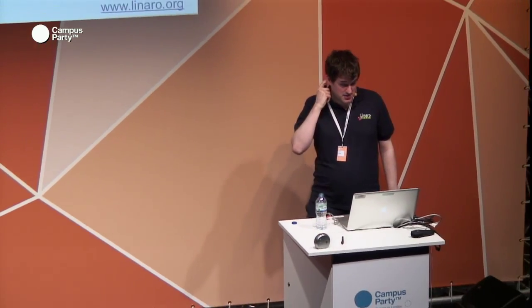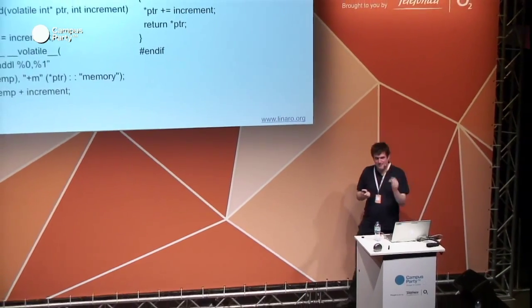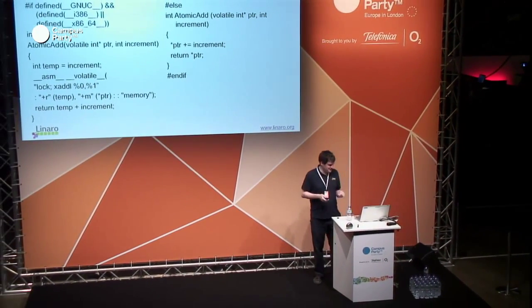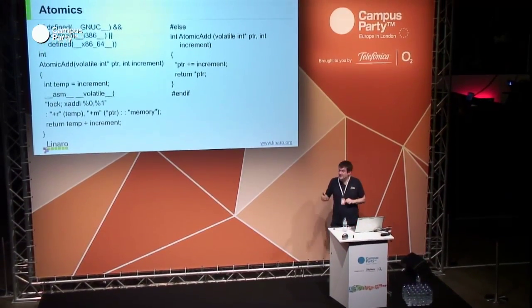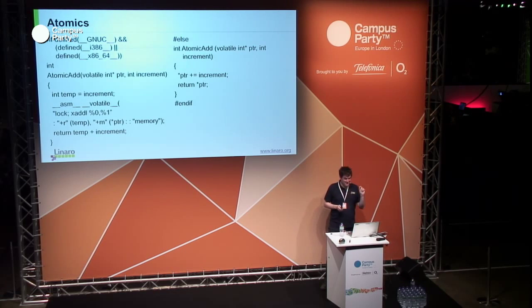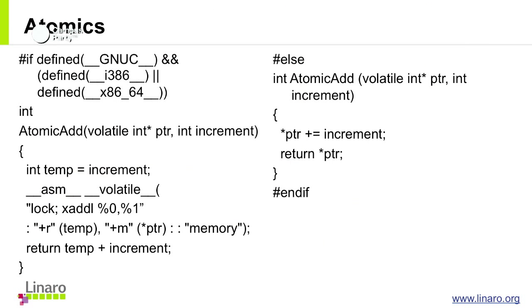Now I'm going to talk about atomics. One of my points is please don't go away writing assembler, because you end up with code like this. This is meant to be an atomic add for all architectures — you're meant to see that it's atomic. For x86 there's some special assembly, but for everyone else in the entire universe, it just does a standard pointer add and return. That's not atomic. There are at least three places where you can change the value of the pointer and get a different result to what was expected.